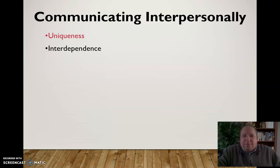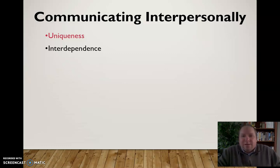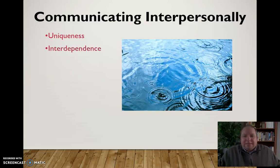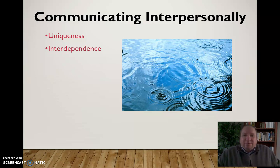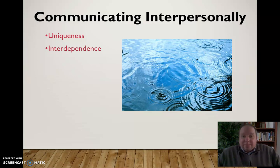Interpersonal communication also involves a sense of interdependence. By interdependence, we mean there's a connection deep enough between two people that what happens to one affects the other. It's like the ripple effect you see on ponds — when you throw a stone in a calm pond, you get ripples that echo out. That's true in an interpersonal relationship as well; what happens to one person will ripple out and affect others involved in a relationship with that person.